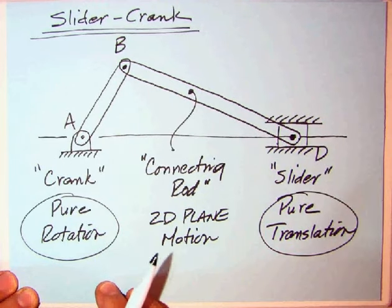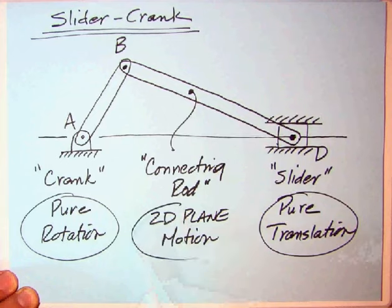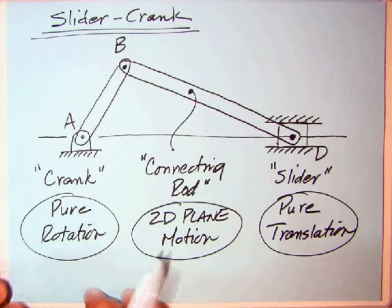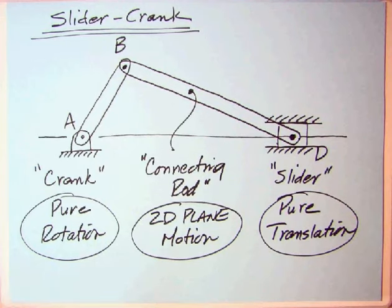The connecting rod is in what we refer to as 2D plane motion. It has both translation and rotation, and we have to consider that when we look at the detailed kinematics, which we're going to do on the next slide. We're going to break up each one of those pieces and look at them separately.